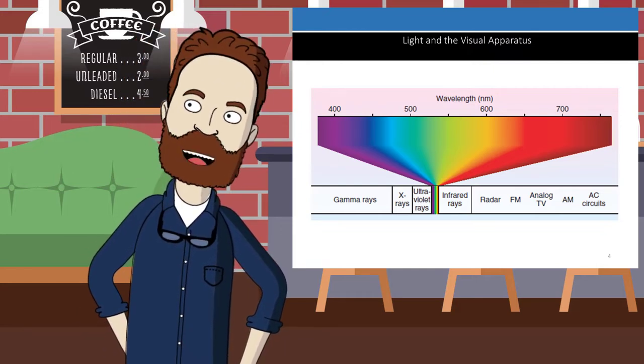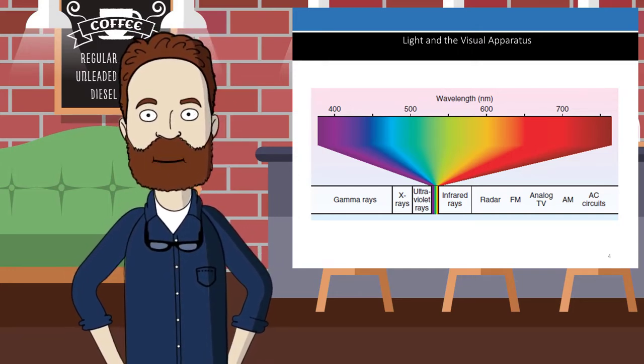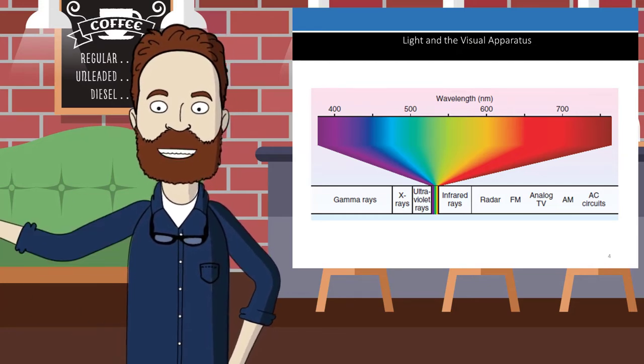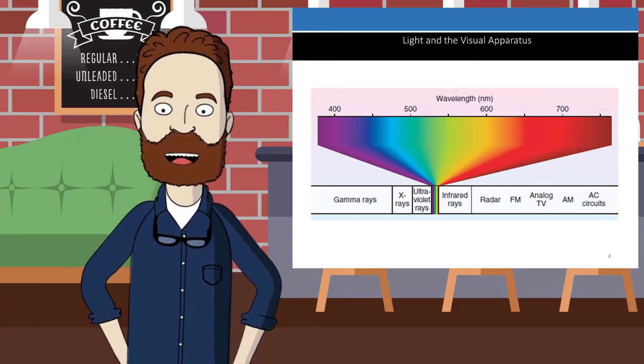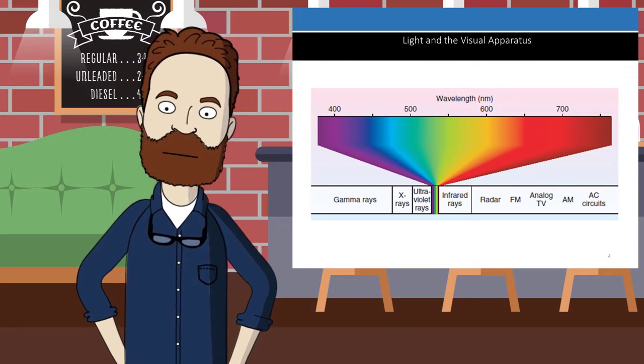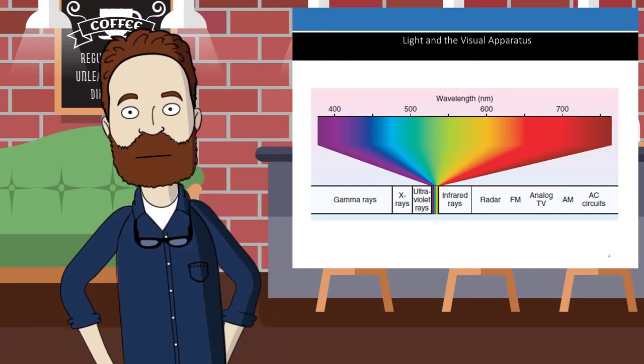They use that to detect their prey in the darkness. Humans, by the way, can convert infrared images to visible ones using specialized equipment, and you usually see that equipment in military and law enforcement. This is for detecting heat-producing individuals or heat-producing vehicles. As I mentioned, light is a form of oscillating energy and it travels in waves just like sound does.